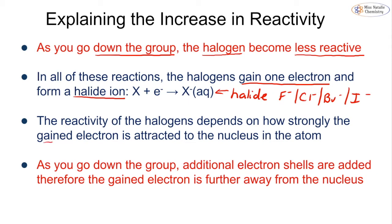Now the reactivity of the halogens is going to depend on how strongly that gained electron is attracted to the nucleus. So the more attracted the electron is, the more strongly it is going to be held. As we go down the group from fluorine down to iodine, we know that we are gaining more and more electrons, so we are adding electron shells. That means that the atoms get bigger.